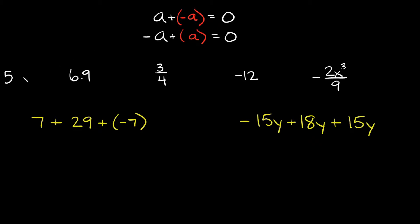Let's do some examples. We have positive 5. What's the opposite of positive 5? Negative 5, right? So if you add negative 5, your answer would be 0.